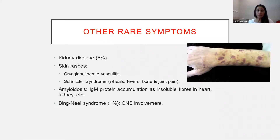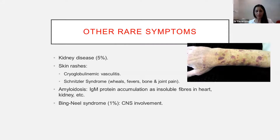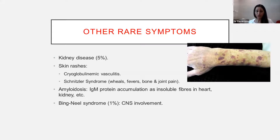Other rare symptoms include kidney disease in 5% of patients, or rare patients may present with skin rash. Amyloidosis — where IgM protein pieces stick together, become insoluble fibres, and deposit in the heart, kidney, and liver — is also rarely seen. And there is a syndrome called Bing-Neel syndrome, which I've seen in only a couple of patients: central nervous system involvement by Waldenström's macroglobulinemia or the lymphoplasmacytic cells.